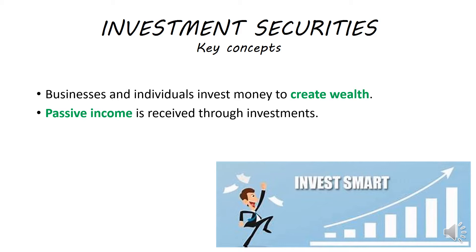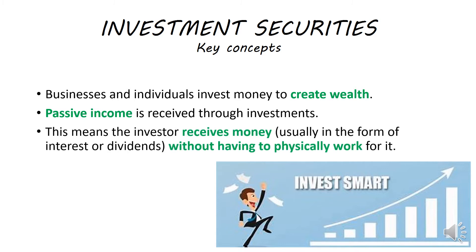A passive income — you're putting your money in the bank and it's just growing. So this means that the investor receives money in the form of interest, if you deposit money in a bank, or dividends, for example, when you buy shares, without having to physically work for it. Passive income is when you receive money for basically doing nothing; you're not physically doing anything to receive that money.